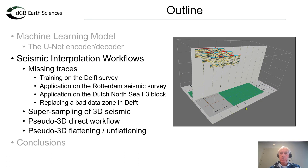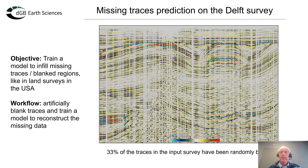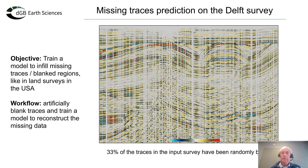Let's go through a number of exercises, starting with interpolating missing traces. Our dataset is from Delft Onshore at Edlands, and we are going to artificially blank a number of traces at random — in this case 33% of the traces — and then train the UNET to reconstruct the image. This type of missing traces is often seen in US land surveys where people don't allow data to be recorded under their own land, so this is a real problem these UNETs can tackle.